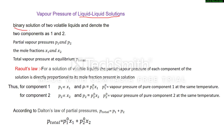We will discuss the binary solution which has two volatile liquids. Volatile means which easily convert into the vapor state. If these two components are represented by 1 and 2, their partial vapor pressures are represented by P1 and P2, their mole fractions by X1 and X2, and total vapor pressure at equilibrium is represented by P_total.